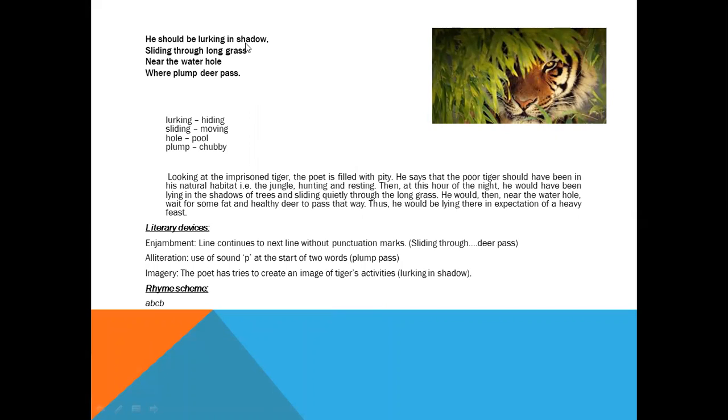Let's find out the rhyme scheme here. Shadow is not rhyming with anyone, A. Grass with pass, B. And hole is another word, so C. A, B, C, B is the rhyme scheme of this stanza.